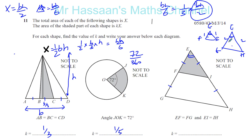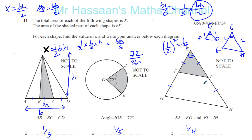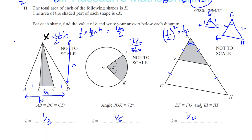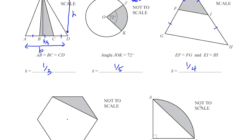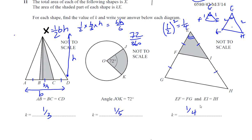Since these are similar triangles and the length of the smaller triangle is half the length of the bigger triangle, the area is the square of that ratio — which is a quarter. For similar shapes, the ratio of areas is the square of the ratio of lengths. So the area of the small triangle is a quarter of the big triangle. If the whole area is x, the shaded part is one quarter of x. So k equals one quarter. The three answers so far are: one third, one fifth, and one quarter.